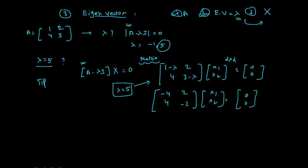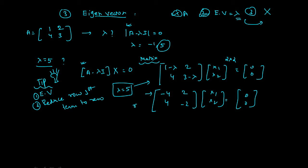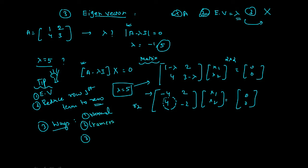Here is an important tip: whenever you are trying to find the eigenvectors, reduce the first term of each row (after the first row) to 0. Leave the first row; from the second row onward, try to make the first-column term 0. There are many ways to solve this kind of matrix: first is the normal method we are doing in this video, second is Cramer's rule which we will see in future videos, and third is when two rows are the same.